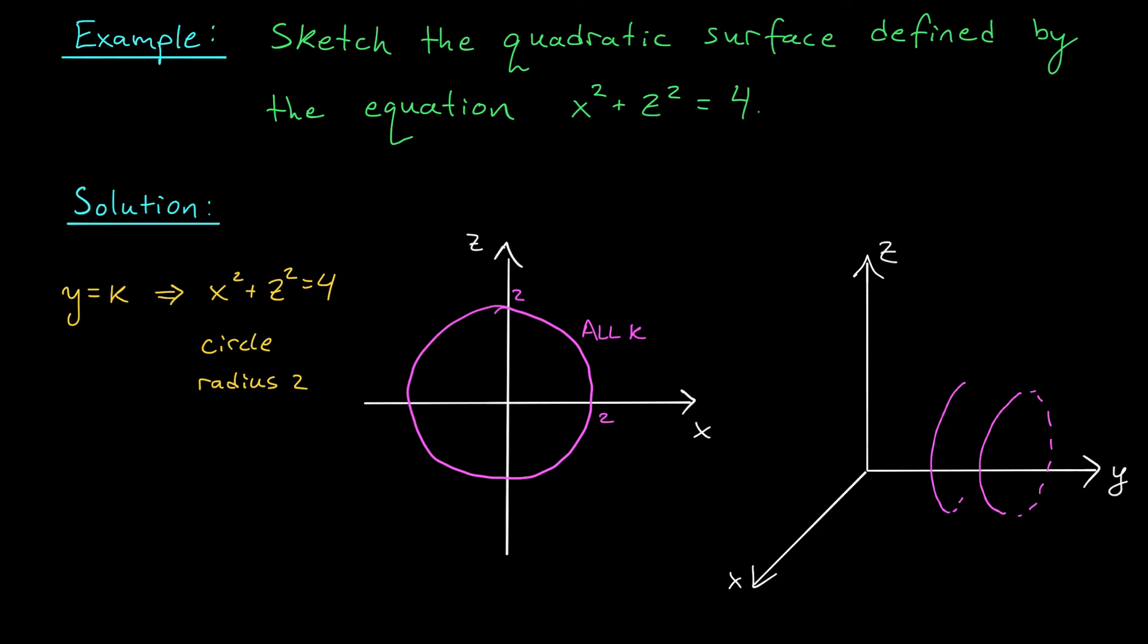I should have the exact same circle. What do you think we're going to get for a 3D graph? I think you got it. A cylinder. It's a cylinder extending in the y direction of radius 2. How do you think this graph would change if our equation were x² + y² = 4? As an exercise, give it a try.